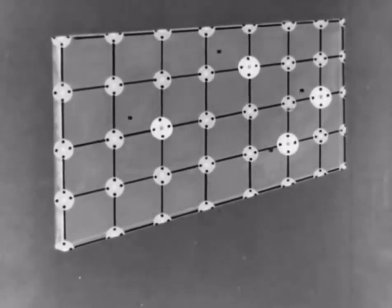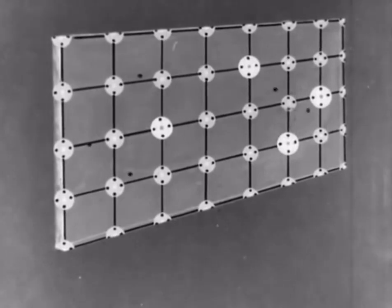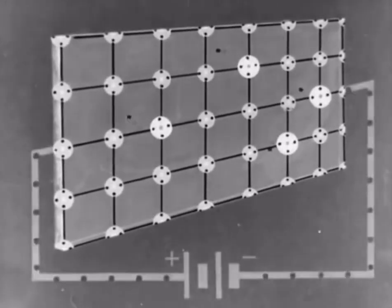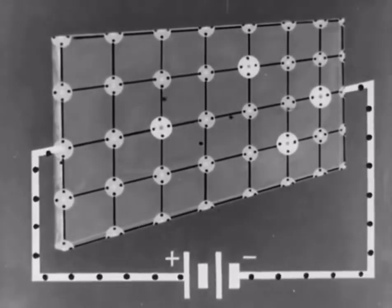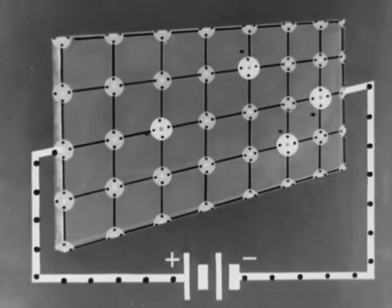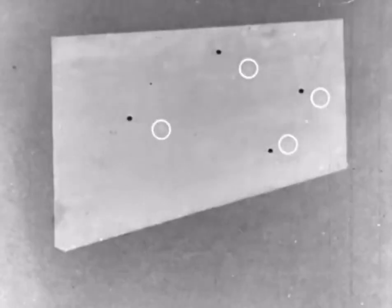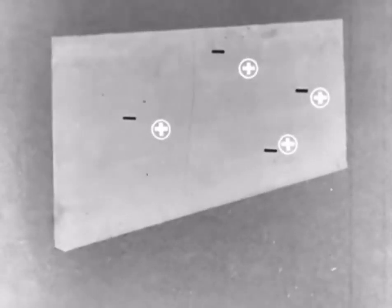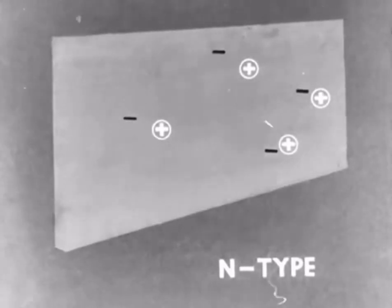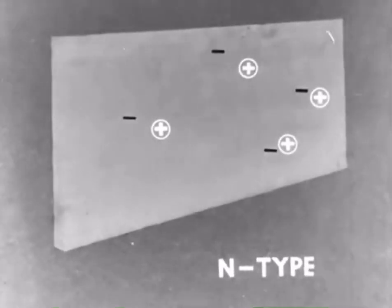Introducing a number of impurity atoms releases sufficient electrons to carry a current when an electric field is applied. The impurity atoms, because they give up electrons, are called donor atoms. A semiconductor like this, in which current is carried by free electrons, is known as N-type. N for negative carrier.